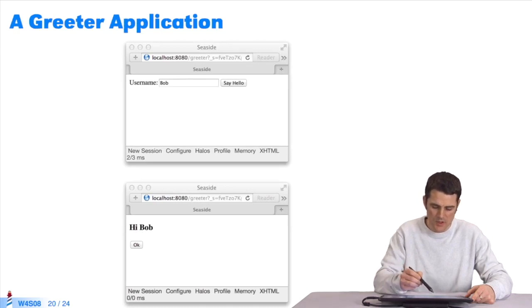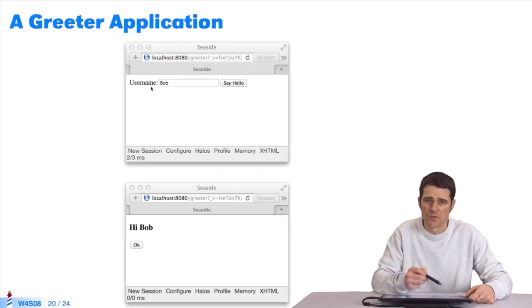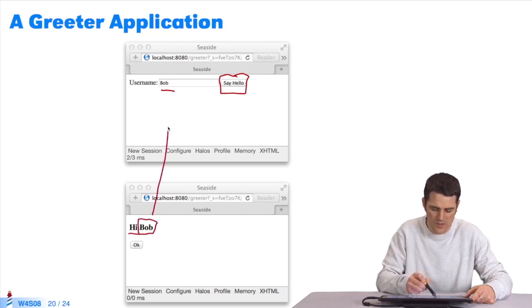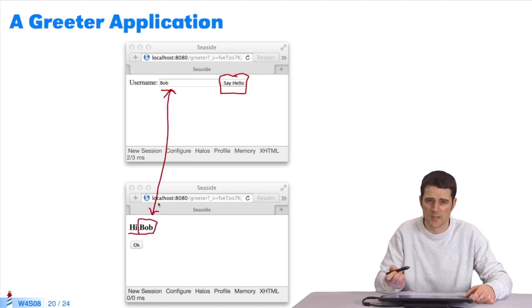Next, I'll show you how to write a greeter application. The user enters his first name. He types it in here, and when he clicks on say hello, we want to display a string of characters, Hi and the username he entered in the beginning here.